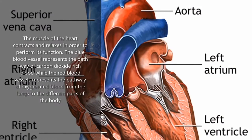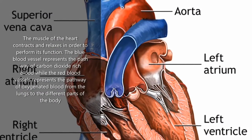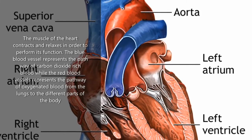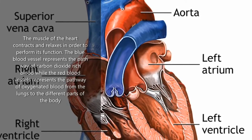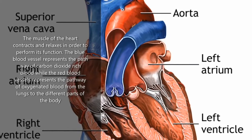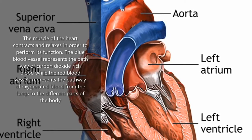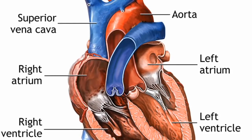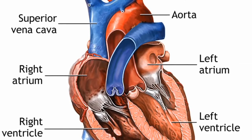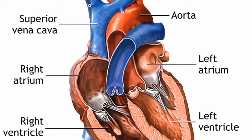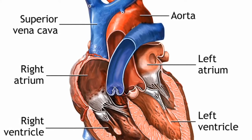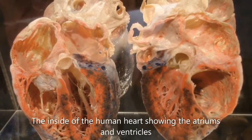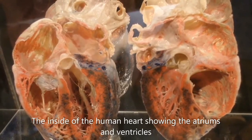The muscle of the heart contracts and relaxes in order to perform its function. The blue blood vessel represents the pathway of carbon dioxide-rich blood, while the red blood vessels represent the pathway of oxygenated blood from the lungs to the different parts of the body.